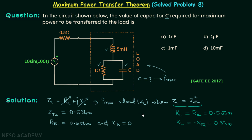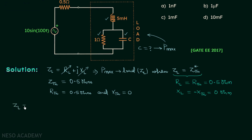Now, the approach to find capacitance C: we calculate ZL from this combination. C will appear in both the real part and the imaginary part of ZL. The real part of ZL must equal 0.5 Ohm and the imaginary part must equal 0 Ohm. ZL equals the inductor in series with the resistor in parallel with the capacitor.